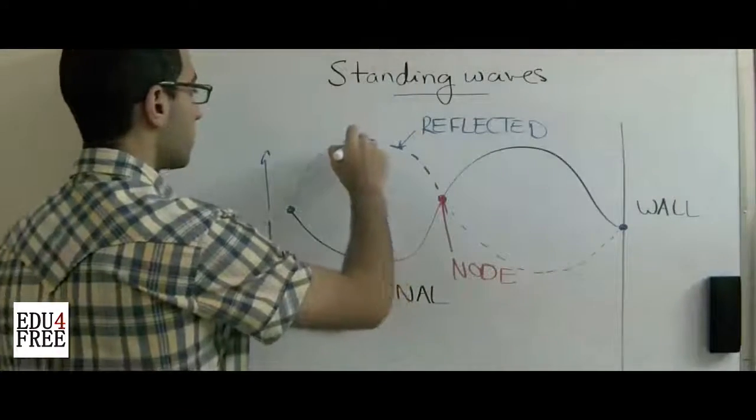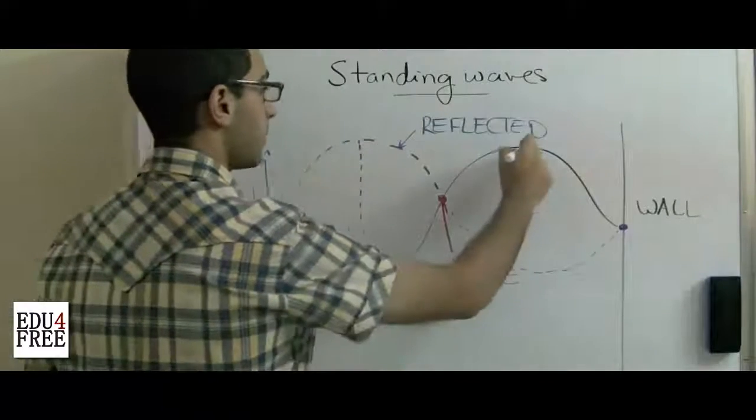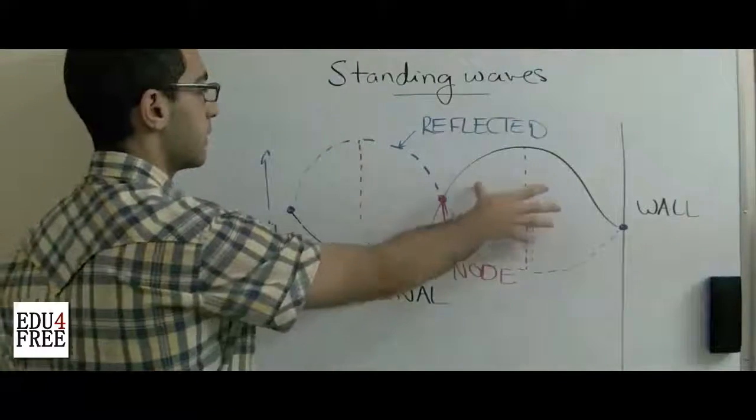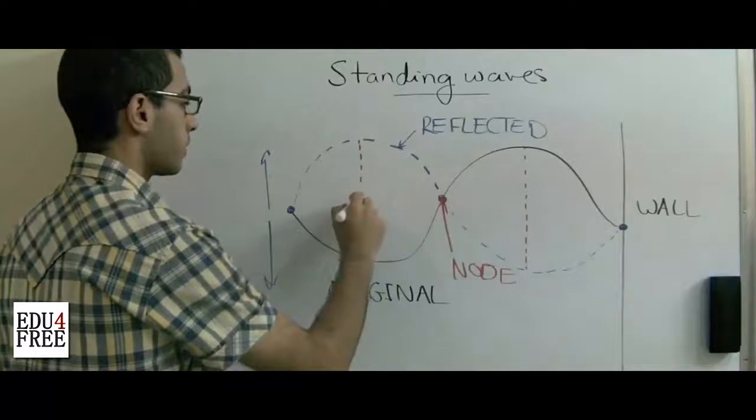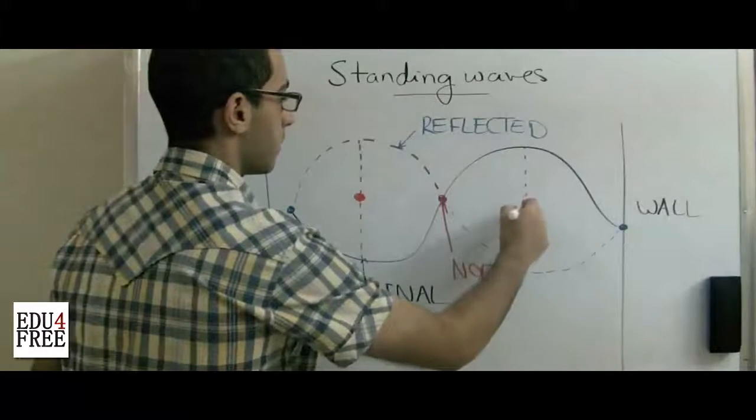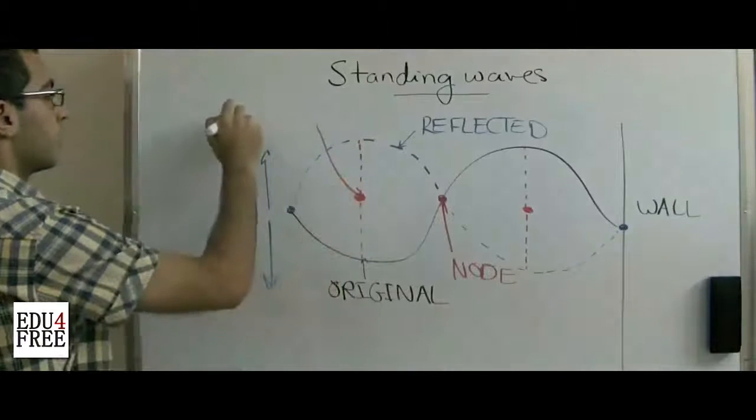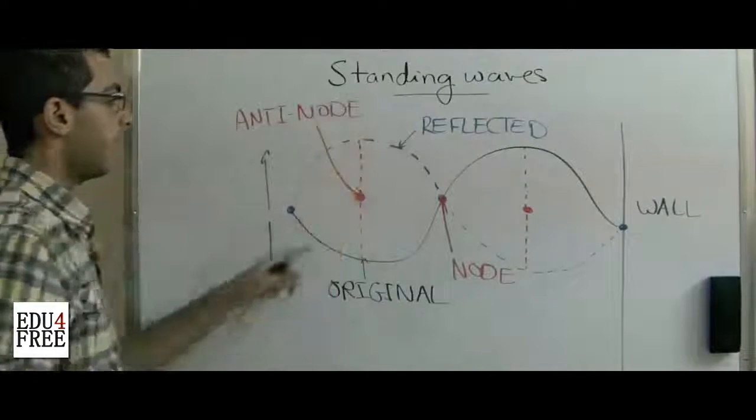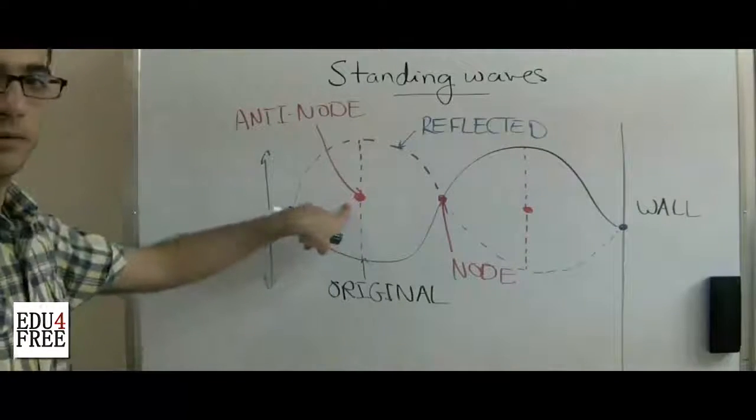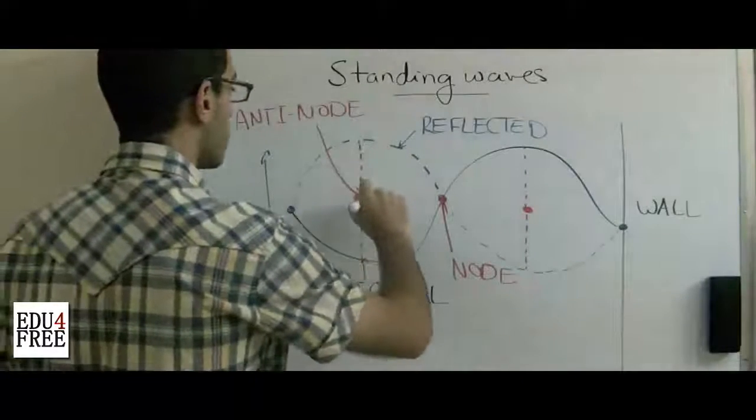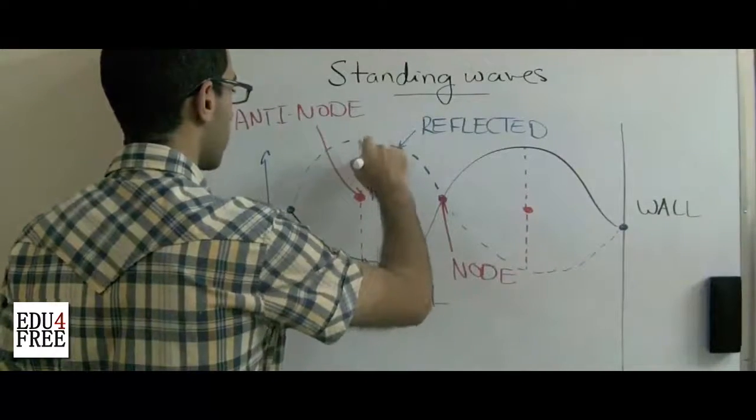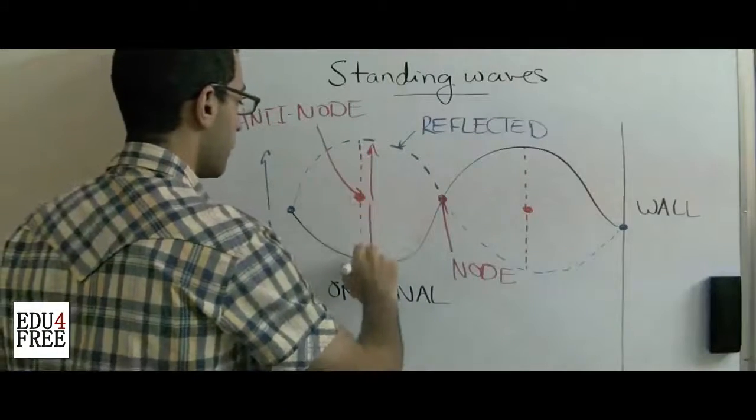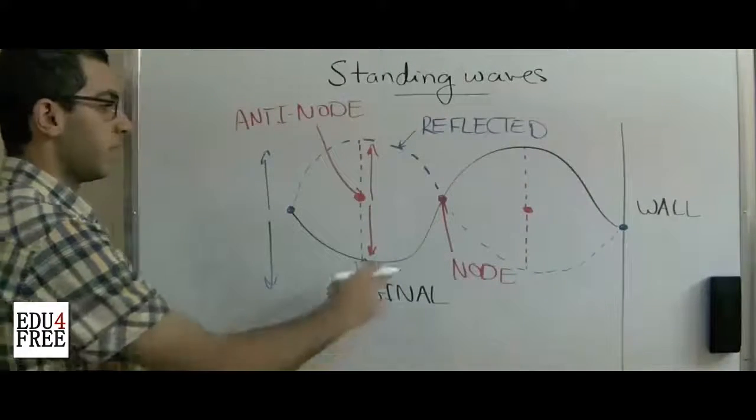While at the middle of each part of the standing waves, there is another point which is called anti-node. And the anti-node is a point of constructive interference, because here this is the maximum displacement, or the amplitude, of the reflected wave. And this is also the maximum displacement, or amplitude, of the original wave.